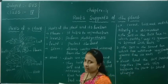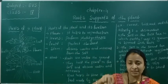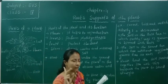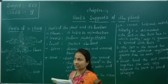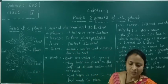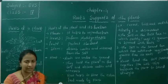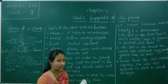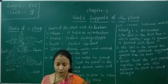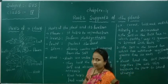Put some ragi or paddy grains in one shell, and don't put anything in the other shell — leave it as it is. Sprinkle some water on both shells daily. The ragi or paddy grains will germinate within a week.